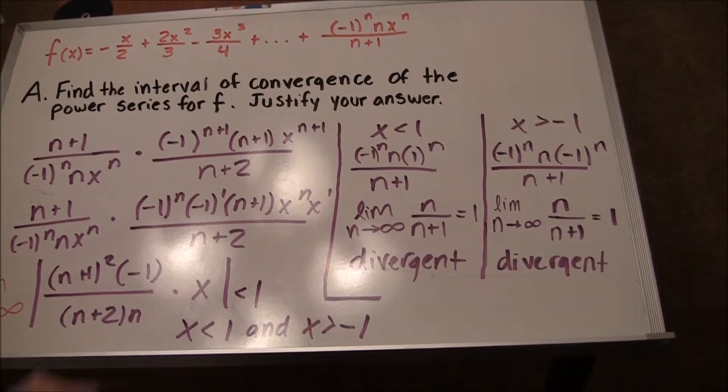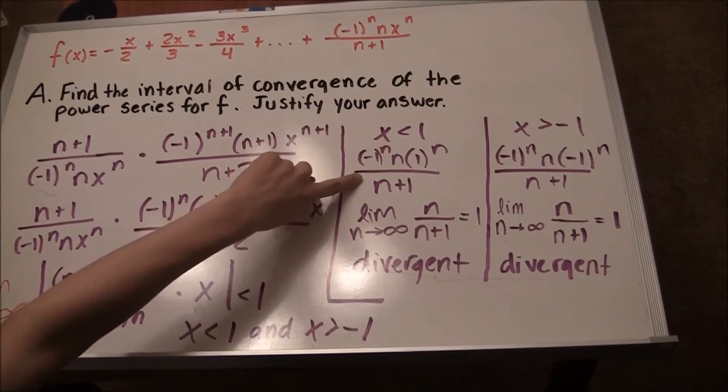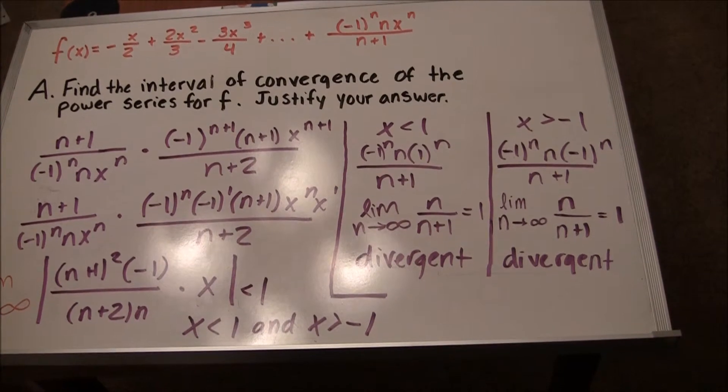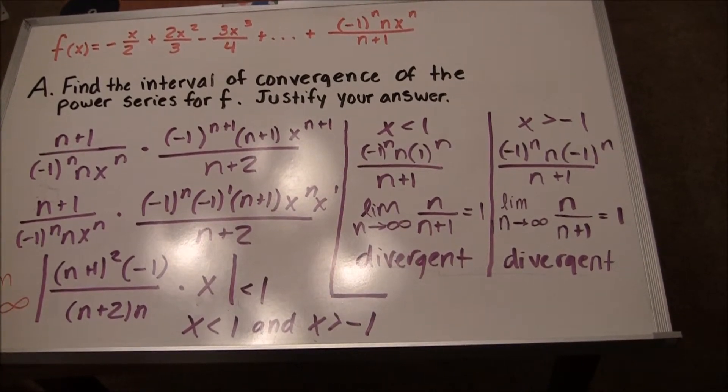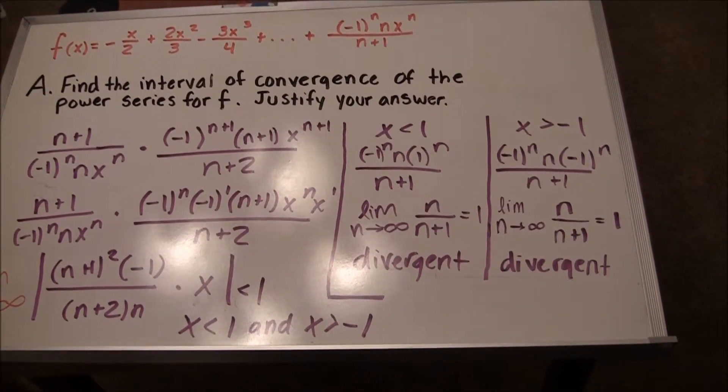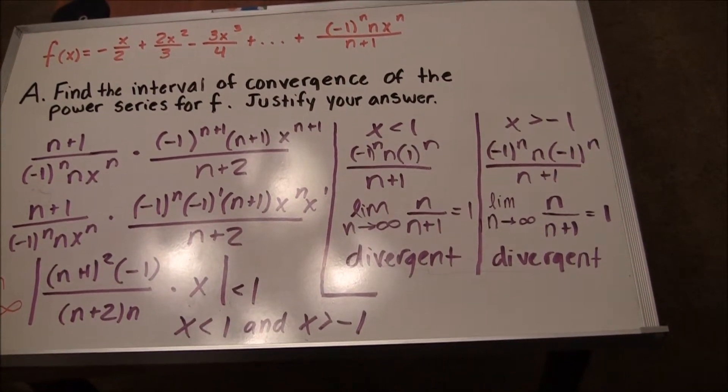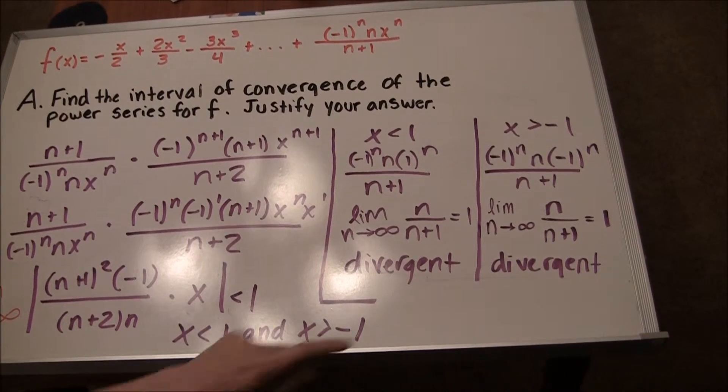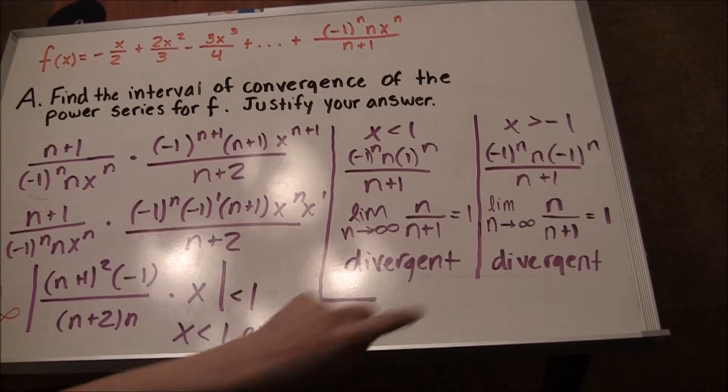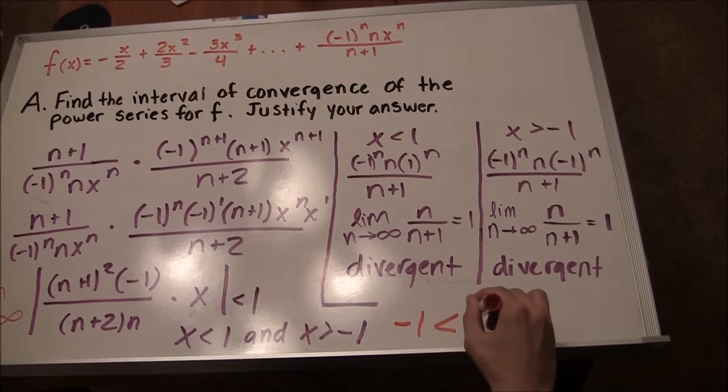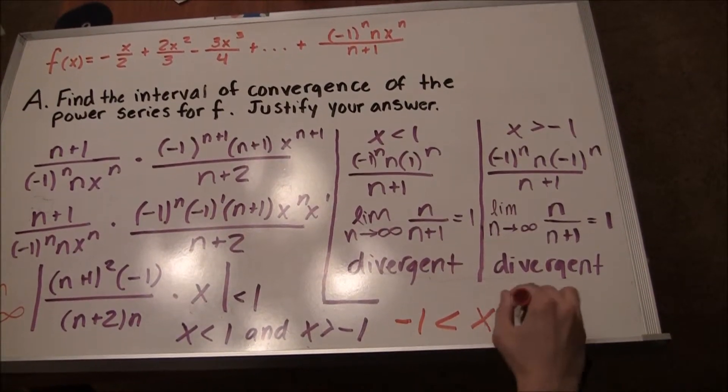When x equals 1, the series is negative 1 half plus 2 thirds minus 3 fourths. The series does not converge because the limit is not zero. Therefore, the interval of convergence remains at negative 1 is less than x is less than 1.